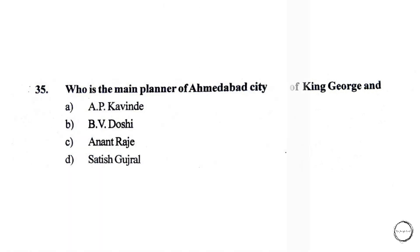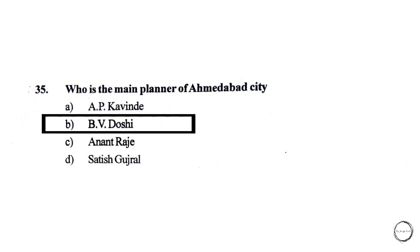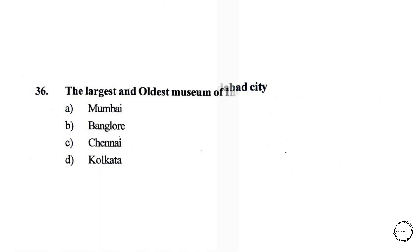Moving on, who is the main planner of Ahmedabad city? Options are: A) P. Kanvinde, B) B.V. Doshi, C) Anant Raje, D) Satish Gujral. The right answer is option B, B.V. Doshi.